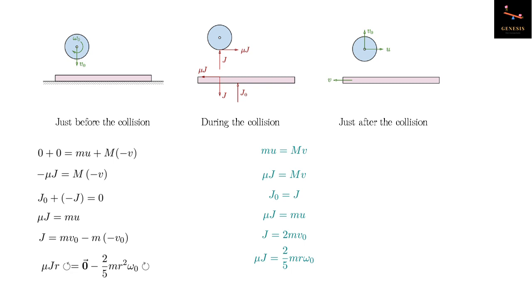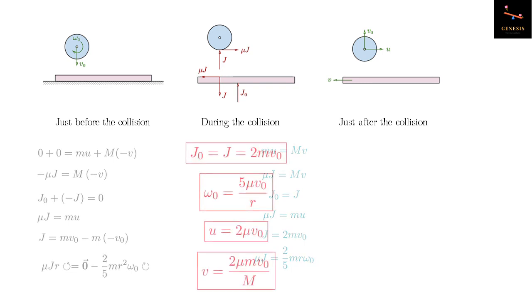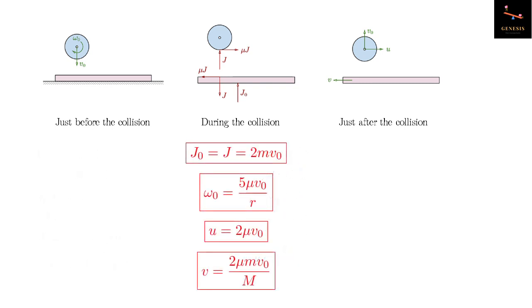Now I leave the solution of these equations to you — pause the video and work it out. Here are the answers: J0 and J are the same, which is 2·M·v0; omega0 is 5·mu·v0 divided by r; U is 2·mu·v0; and V is 2·mu·m·v0 divided by capital M.